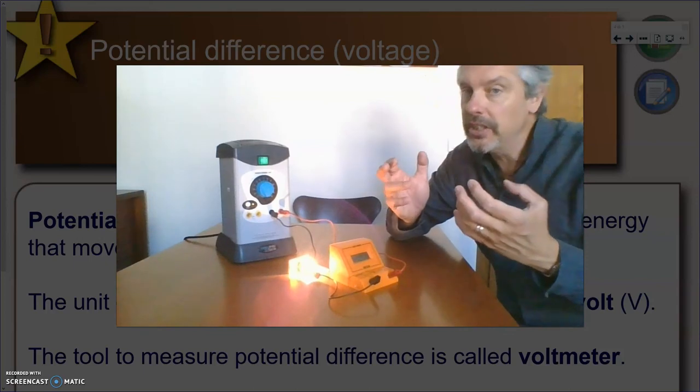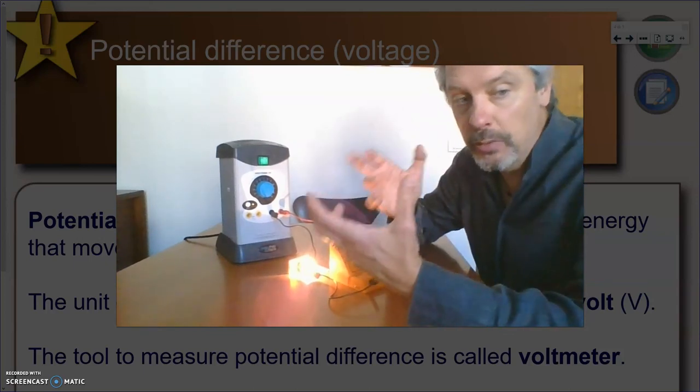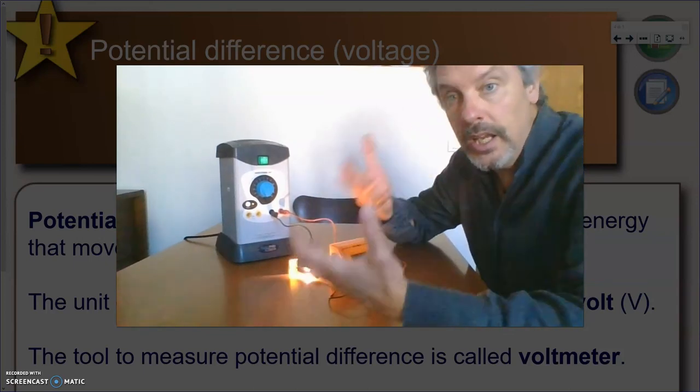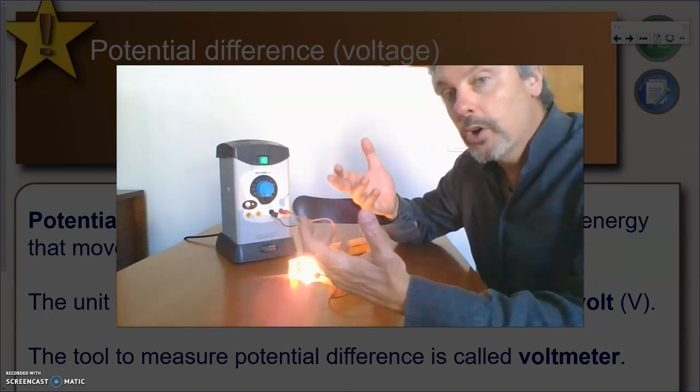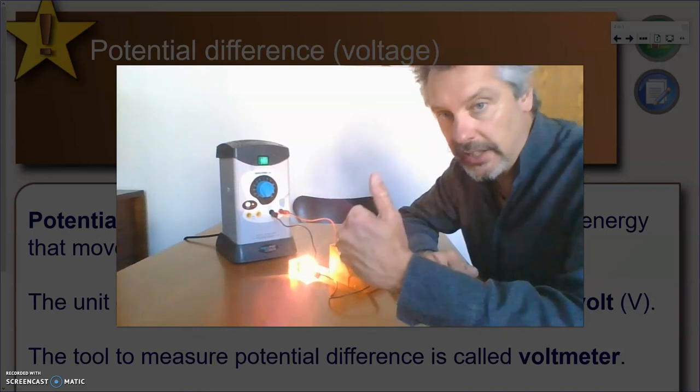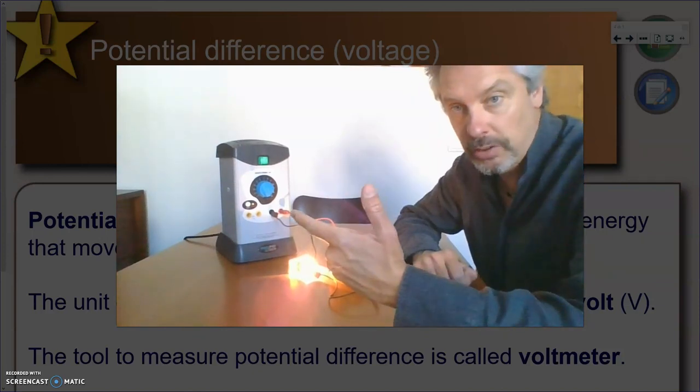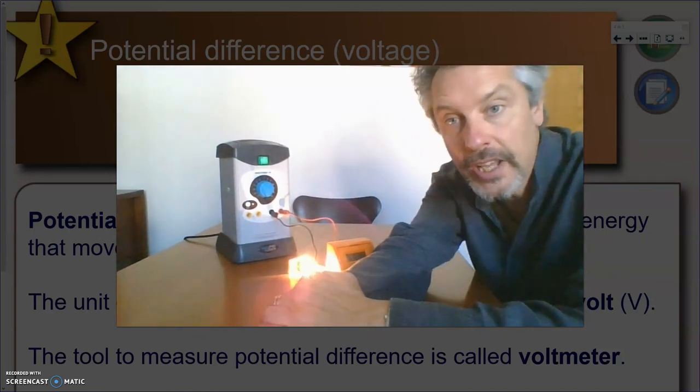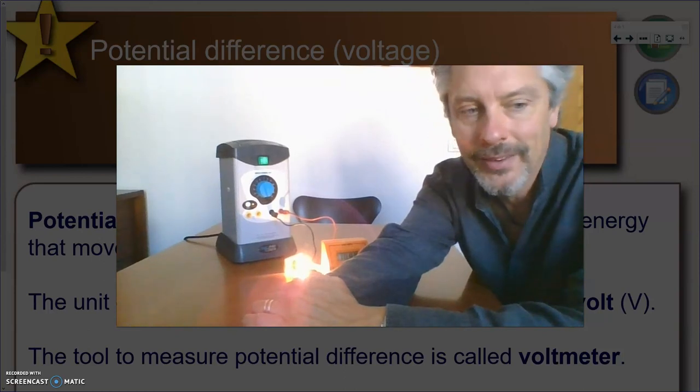So, we have now two quantities that are apparently related to each other. In the next lessons, we're going to see what is the relationship between electric current and potential difference. But for today, that's all. Goodbye from Mr. Boscherini.